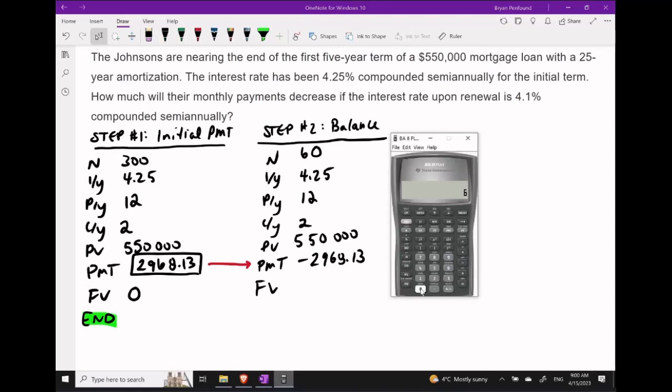So let's go ahead and pull up the calculator. We're going to update N to be 60, and then we'll input our $2,968.13 as a negative number for our payment size. Let's go ahead and compute the future value. Doing this should give us a future value on the mortgage of $480,860 even.